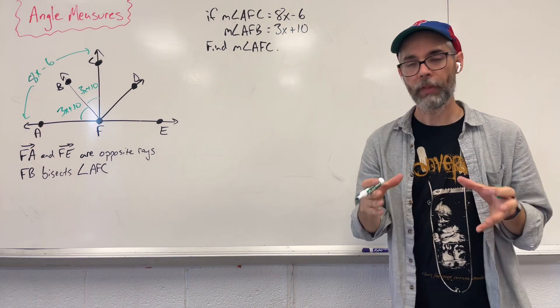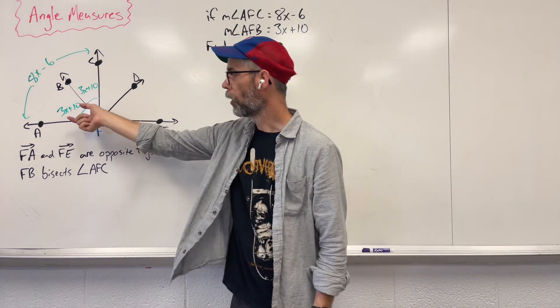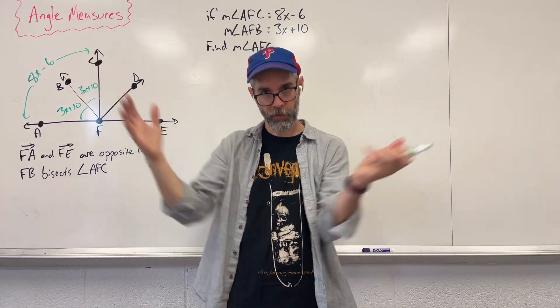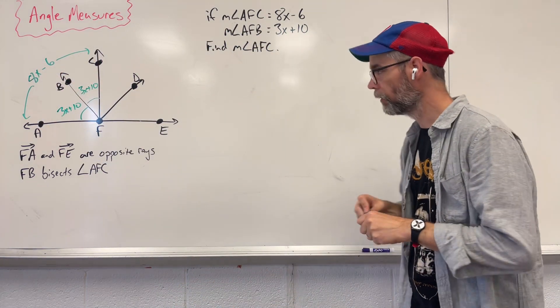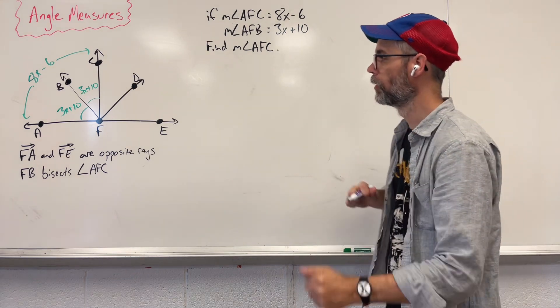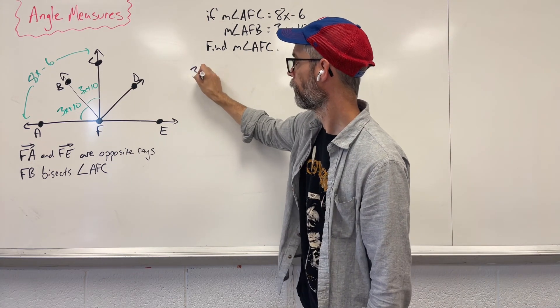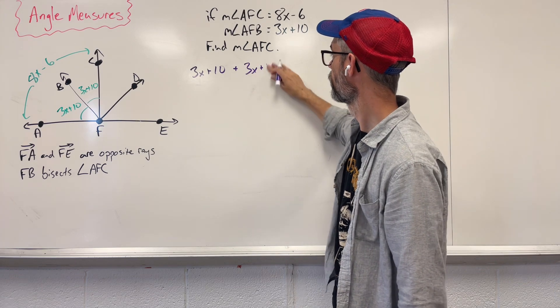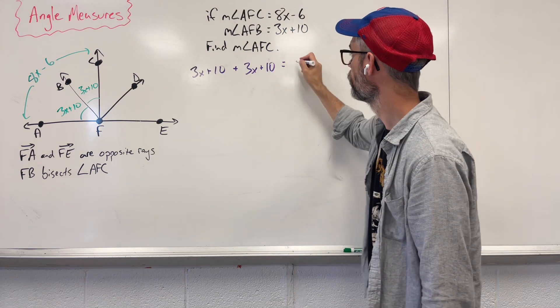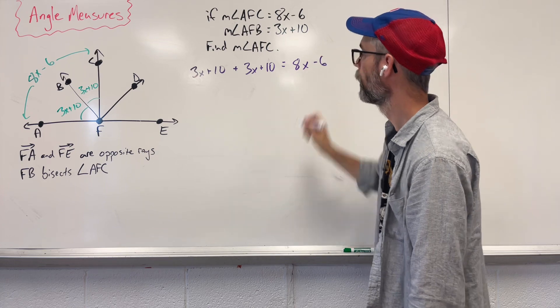When we're dealing with angles, I have a small angle and a small angle, both within the large angle, add these up to equal that. So let's create an algebra problem. We're going to say 3X plus 10 plus 3X plus 10 equals 8X minus 6.